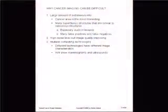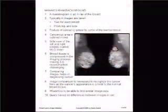Why is cancer imaging difficult? You have a large amount of extraneous information. The cancer area is most interesting, but there are many superfluous structures similar to cancerous structures — examples include ducts and breast tissue. There are many false positives and false negatives. There is a high noise level, but image quality is improving a lot. The thing we're really looking at is the pictorial query specification, which we'll get to soon.